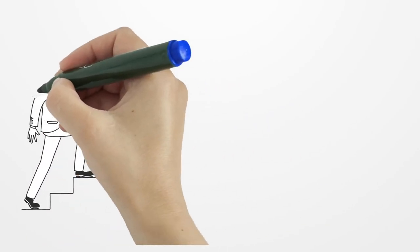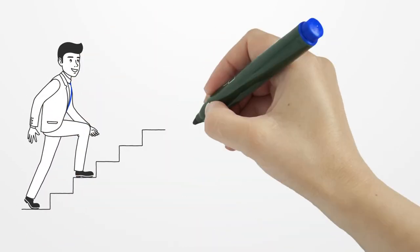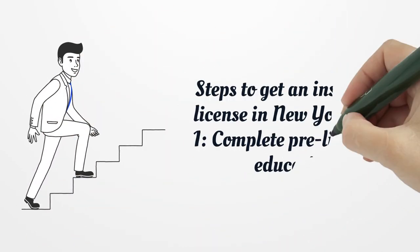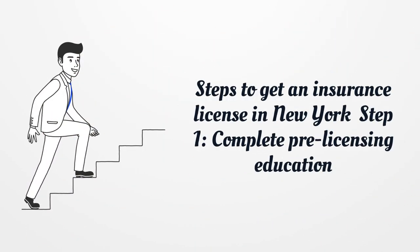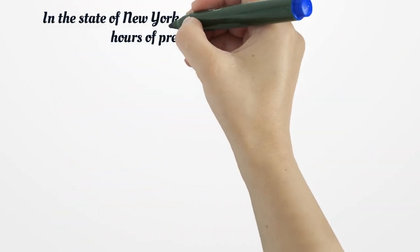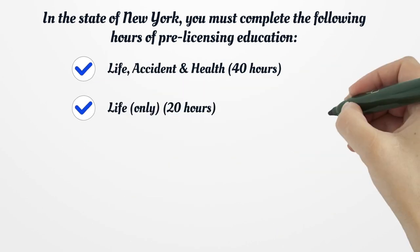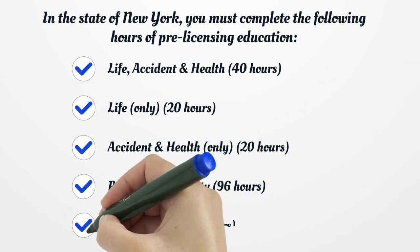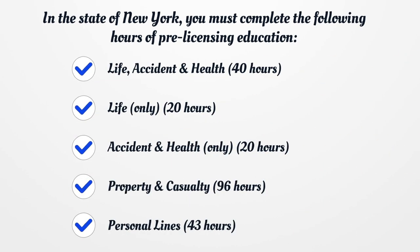Steps to get an insurance license in New York. Step 1: Complete Pre-Licensing Education. In the State of New York, you must complete the following hours of Pre-Licensing Education.